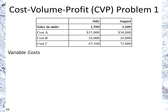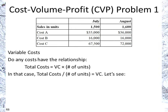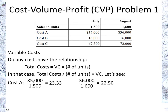For variable costs, we need to ask: do any costs have the relationship that total costs equal the variable cost times the number of units? So if we take total costs and divide by the number of units, we should get a constant value — the variable cost per unit. Let's look at cost A: we have 35,000 over 1,500, which is 23.33, and 36,000 over 1,600 units, which is 22.5. Clearly this is not a variable cost — we have a different value.